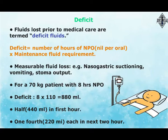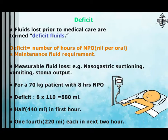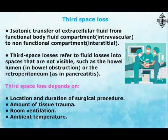For a 70-kilogram patient with 8 hours NPO: deficit = 8 × 110 = 880 milliliters. Give half — 440 milliliters — in the first hour, then one quarter — 220 milliliters — in each of the next two hours.